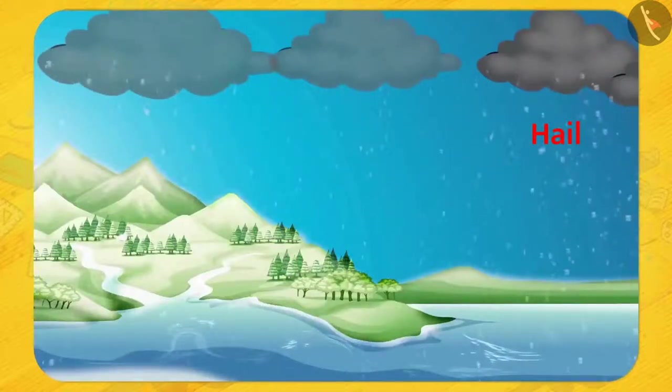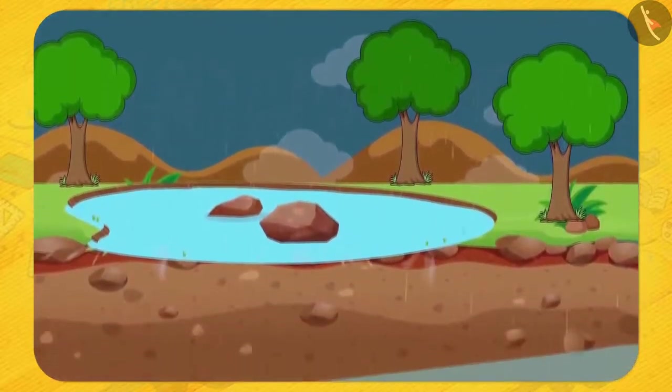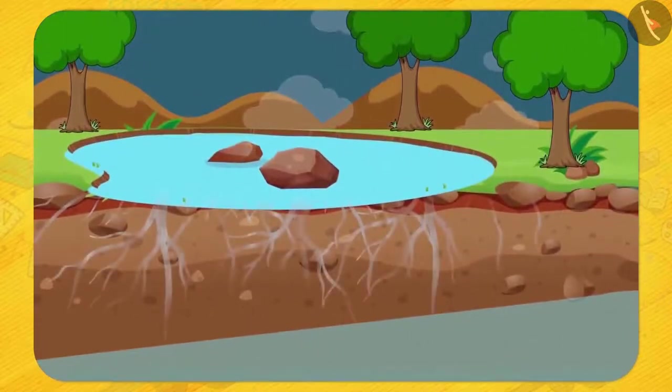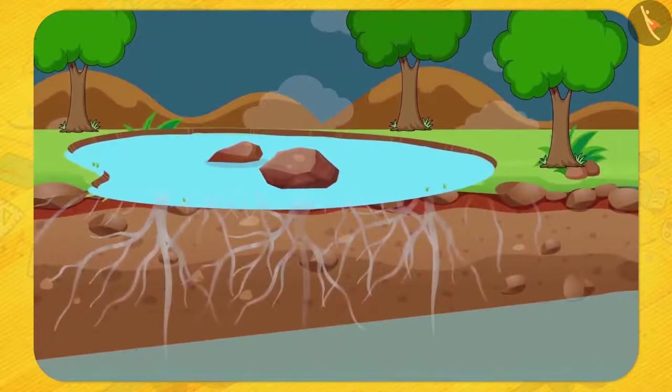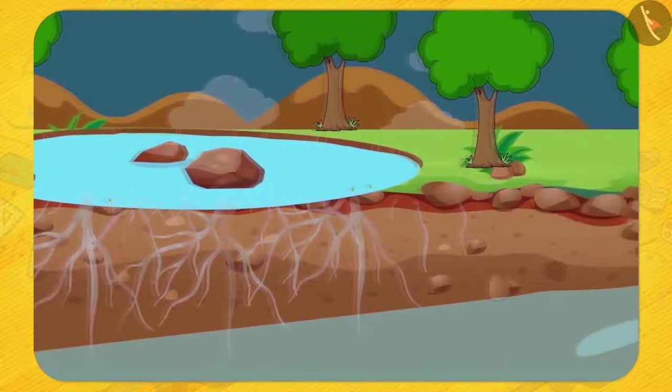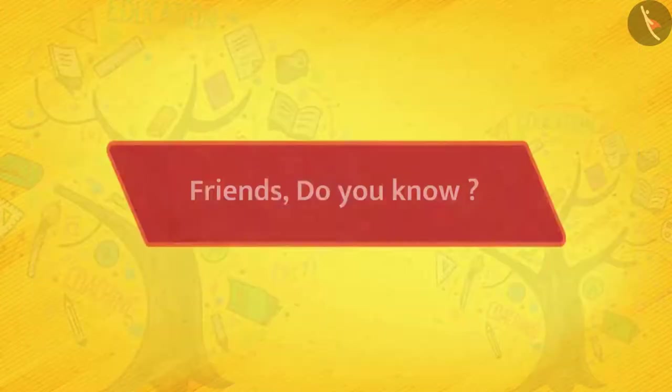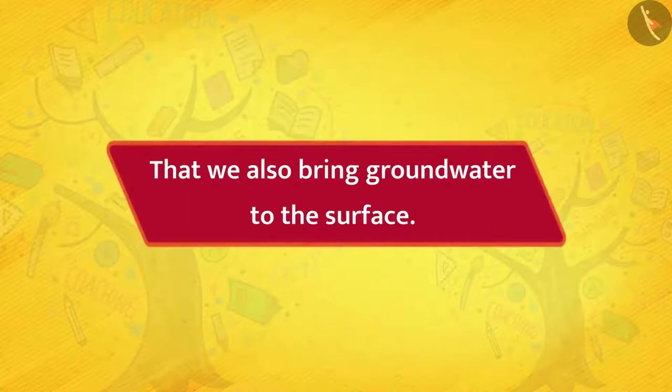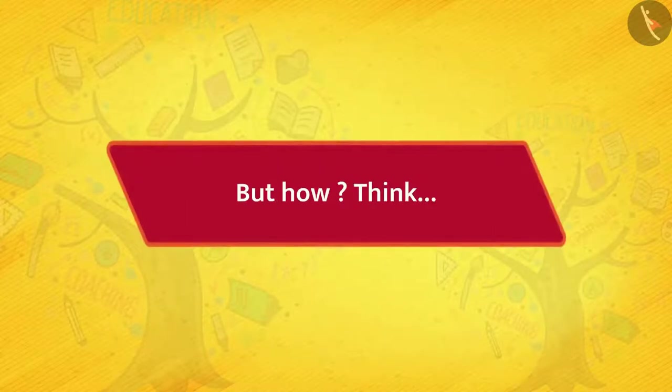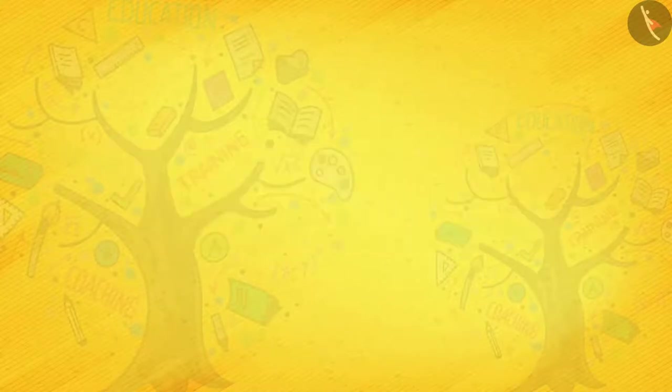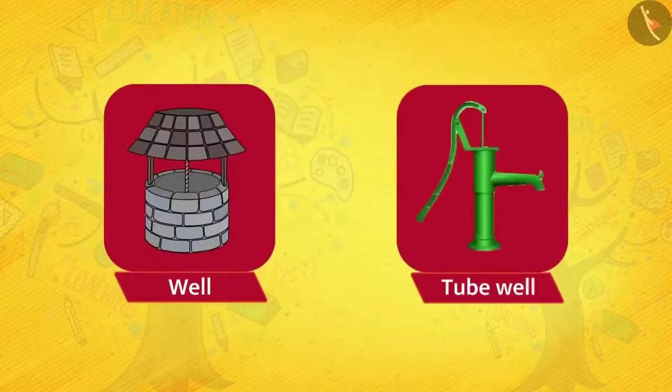Some of the water falling on the earth seeps into the ground and is available as groundwater. Some part of this water also reaches the surface through springs. Friends, do you know that we also bring groundwater to the surface? But how? Think. Via wells or tube wells.